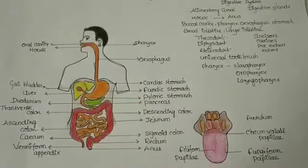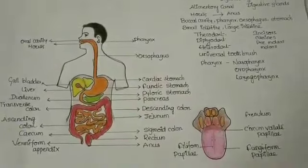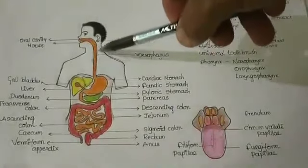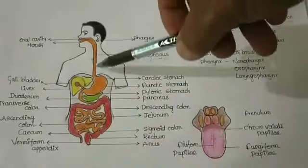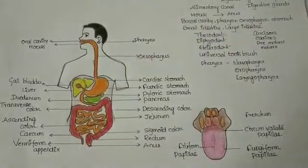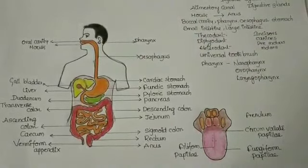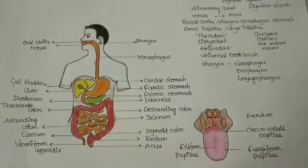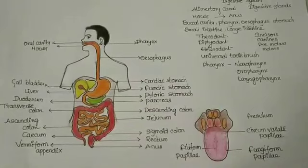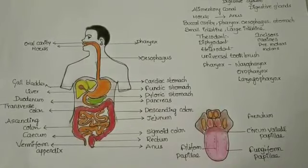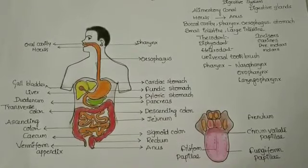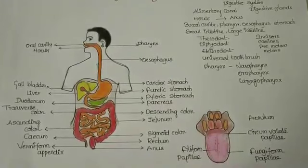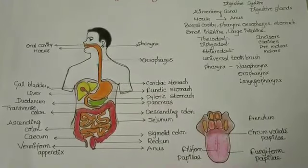The pharynx leads into the esophagus. The esophagus is a thin, long tube that passes through the neck, thorax, and diaphragm, and it finally leads into the stomach.